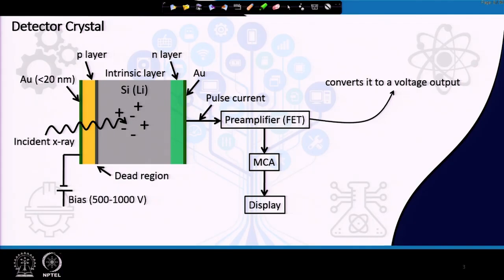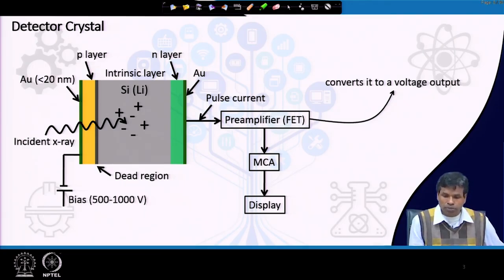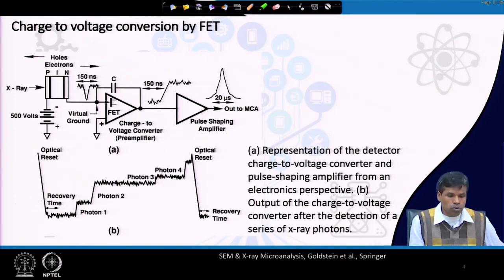This detector is placed at a lower temperature of 77 Kelvin so that its conductivity will be less. In addition, this PIN junction is reverse biased so that we can separate out the electron-hole pairs generated due to the incident X-ray and collect the current generated in the detector. That current is amplified with a field effect transistor and then converted to a voltage output. The FET converts the charge or current from the X-ray detector to voltage, which is then deposited to a capacitor.